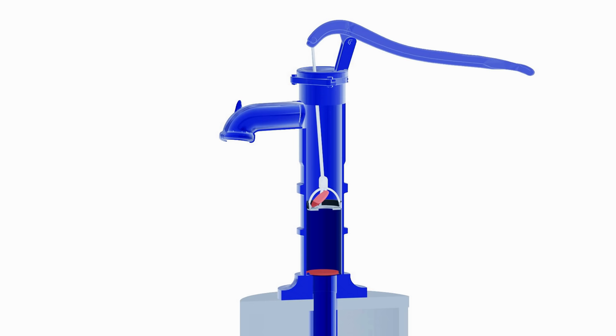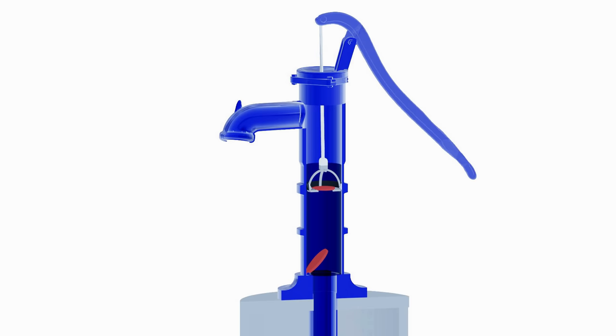Simultaneously, the foot valve closes and prevents water from returning back to the well. In the next cycle, the piston displaces the water through the outlet, as shown.